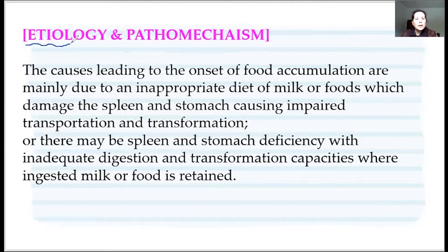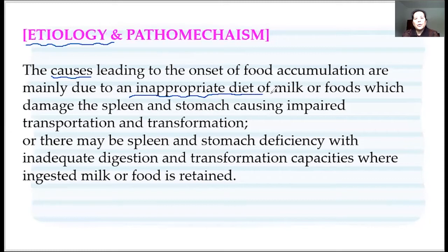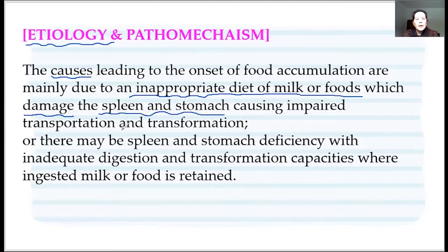So that's what we talk about with the etiology and the pathology. The cause of the illness is mainly feeding the baby improperly — maybe the food, maybe the milk. Generally speaking, maybe the amount is too big, or maybe the quality of the food is something the children couldn't handle. What it damages is the middle jiao function — the spleen and stomach function.